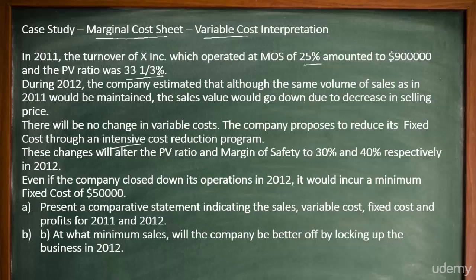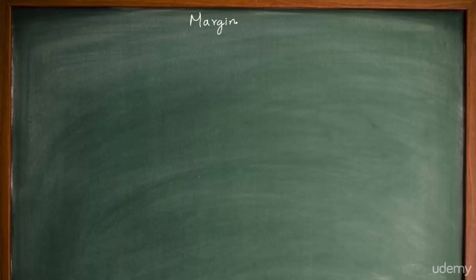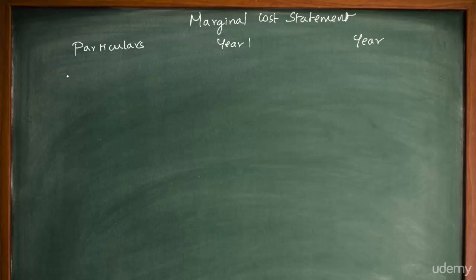We have sales information and profit volume information, so we can automatically find the contribution. Finding profit requires a small working note. We'll give structure to the marginal cost sheet with the heading 'Marginal Cost Statement,' listing particulars for Year One and Year Two. We'll start with sales as item A.